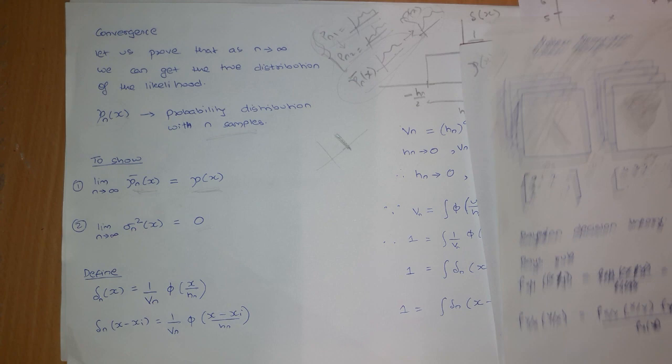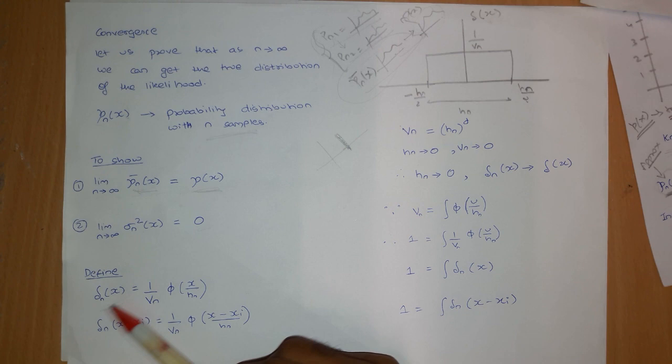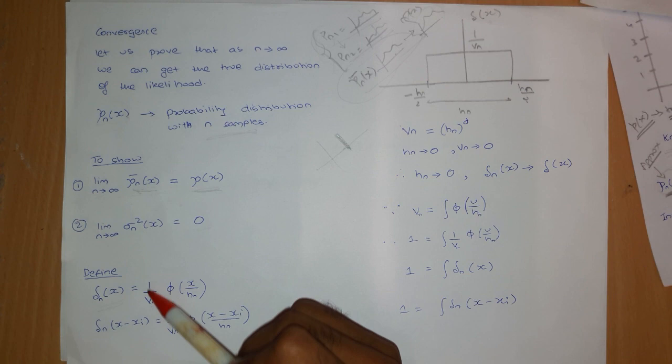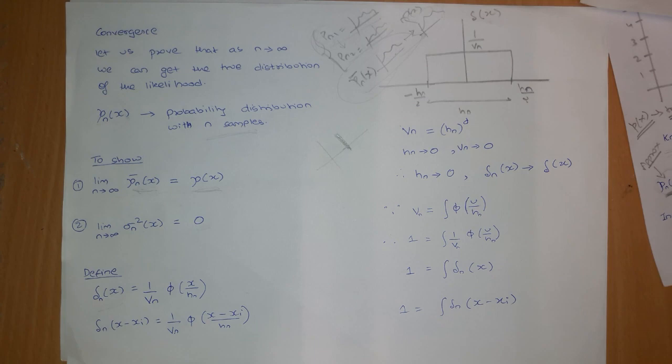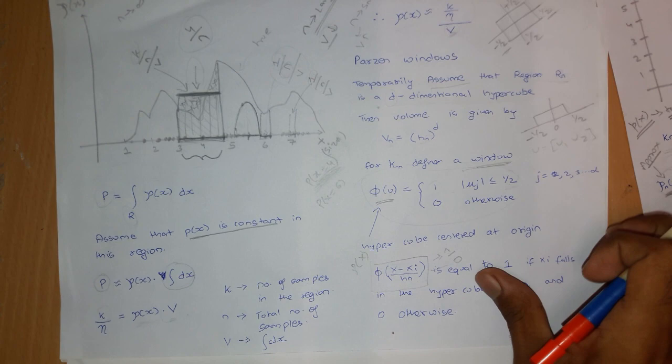For the proof, we will need to define a function δ_n of x. So δ_n of x is defined as 1 upon V_n times φ of x divided by h_n. This φ is the old window function used earlier — the same hypercuboid window we saw in the previous lecture.